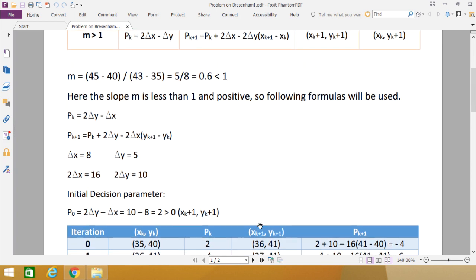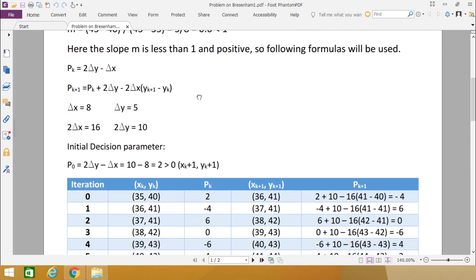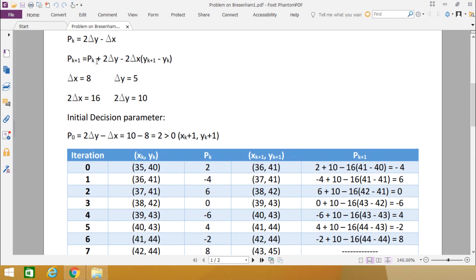Now here we are having the respective pk+1 formula. pk+1 equals pk, that is 2, plus 2·delta y, delta y is 5, so 2·delta y is 10, minus 2·delta x, so 2·delta x here is 16, and here we are having yk+1 - yk. yk+1 here is 41 and yk is 40. So in this way we calculated minus 4.